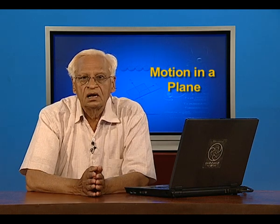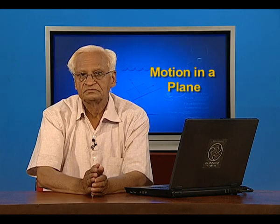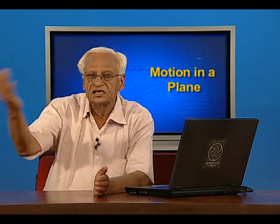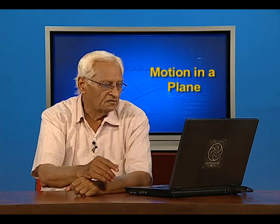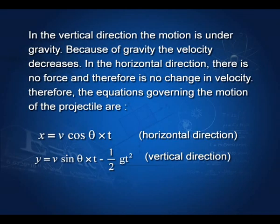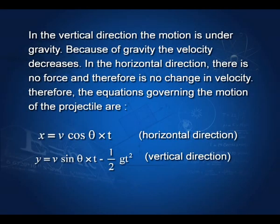Let us now describe the motion of an object launched at an angle to the horizontal from the ground — just like a batsman hitting a ball. We have the components of velocity: v cos θ along the x-axis and v sin θ along the y-axis, and we study the motion independently before superimposing. The distance covered along the x-axis in time t is v cos θ times t, since no force acts horizontally. In the y-direction, the force of gravity acts, so the vertical distance is v sin θ times t minus half g t squared.